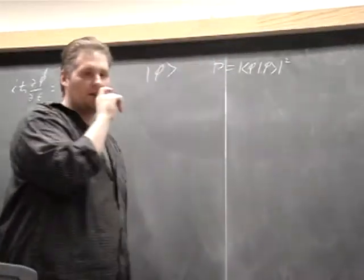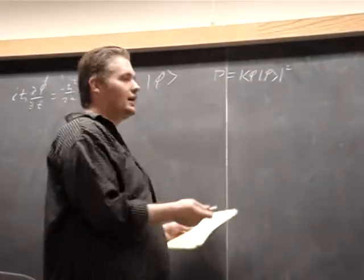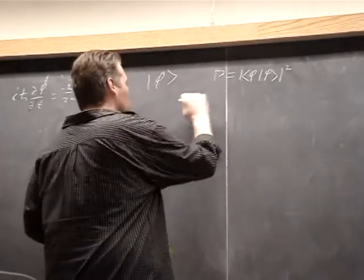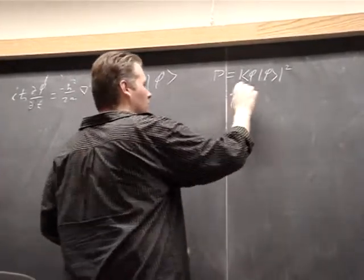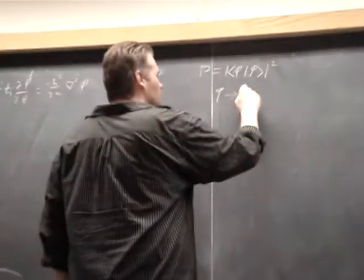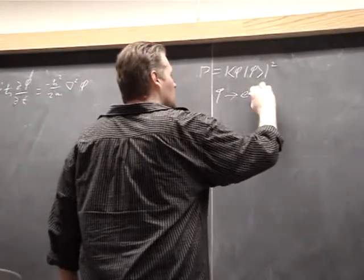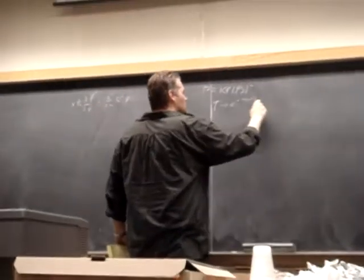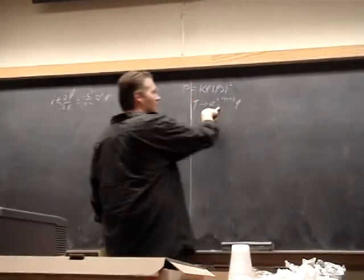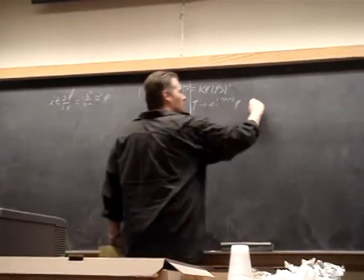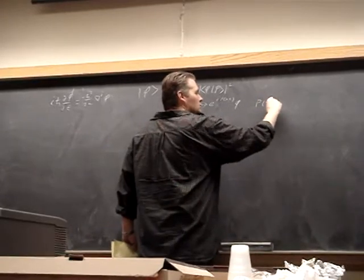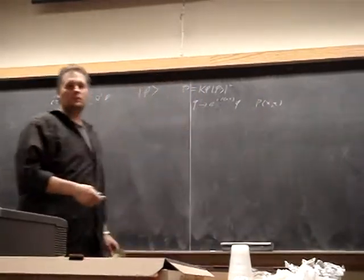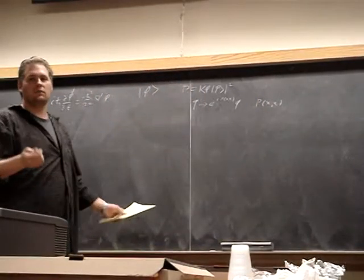So given this equation, we should be able to put a phase on the state. So we should be able to take phi, translated by the exponential with the function p of x and t. That's an arbitrary smooth function of time and space.